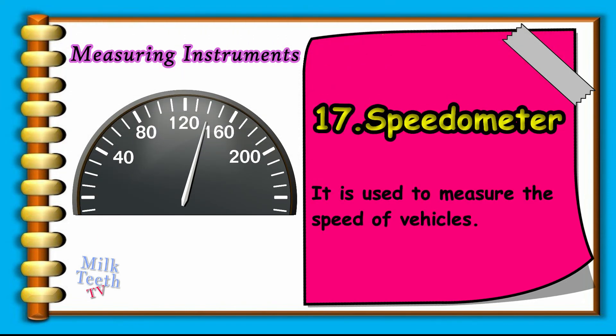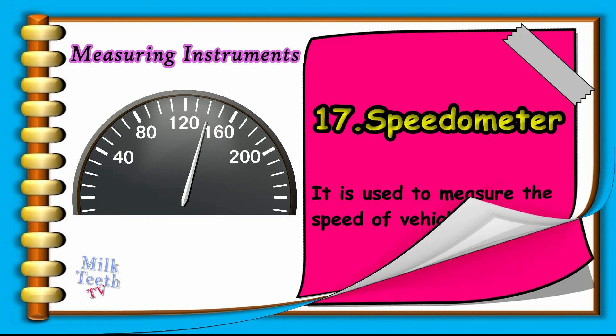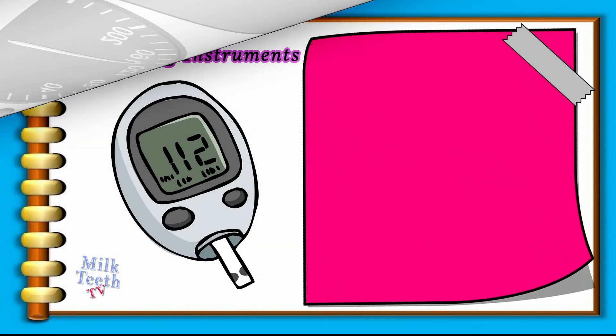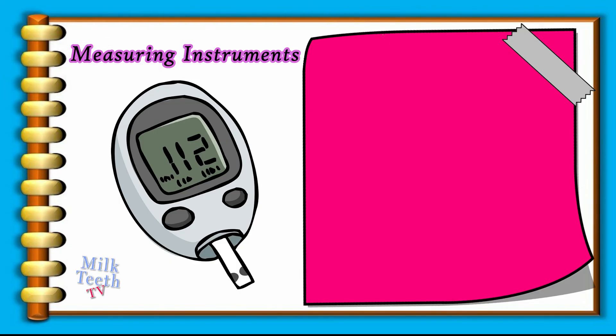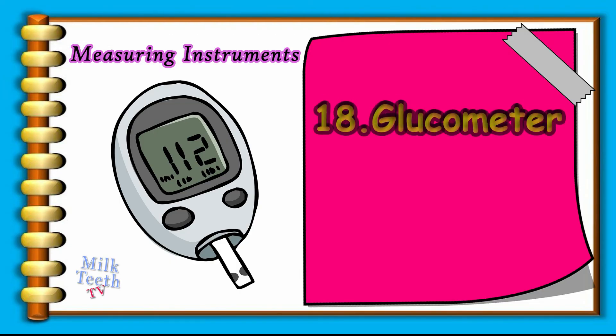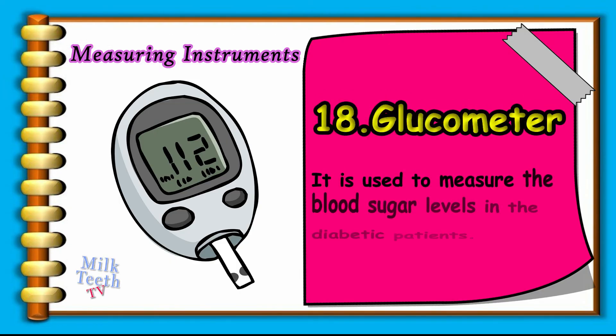Speedometer. It is used to measure the speed of vehicles. Glucometer. It is used to measure the blood sugar levels, basically in diabetic patients.